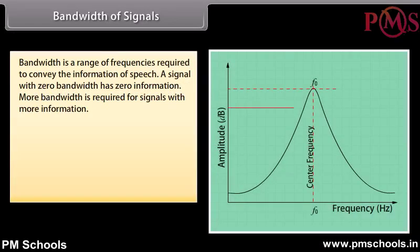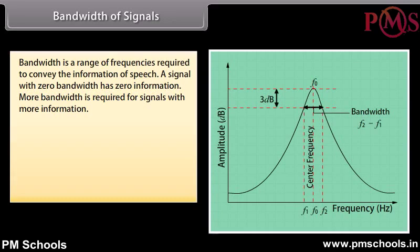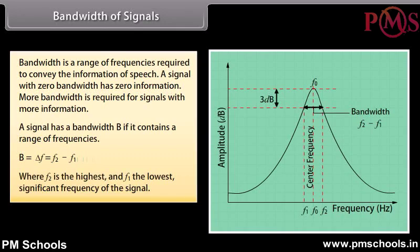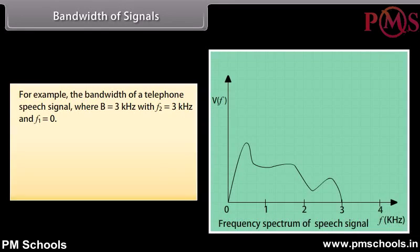Bandwidth of signals: Bandwidth is the range of frequencies required to convey the information of speech. A signal with zero bandwidth has zero information; more bandwidth is required for signals with more information. A signal has a bandwidth B if it contains a range of frequencies: B = ΔF = F2 − F1, where F2 is the highest and F1 is the lowest significant frequency of the signal. For example, the bandwidth of a telephone speech signal is B = 3 kHz, with F2 = 3 kHz and F1 = 0.